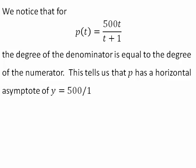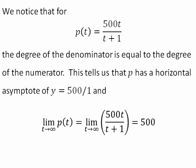I have linear over linear function, and I just take the ratio of the coefficients, 500 over 1. And so the limit as t goes to infinity of the population, the limit will be 500, and that is our steady state.